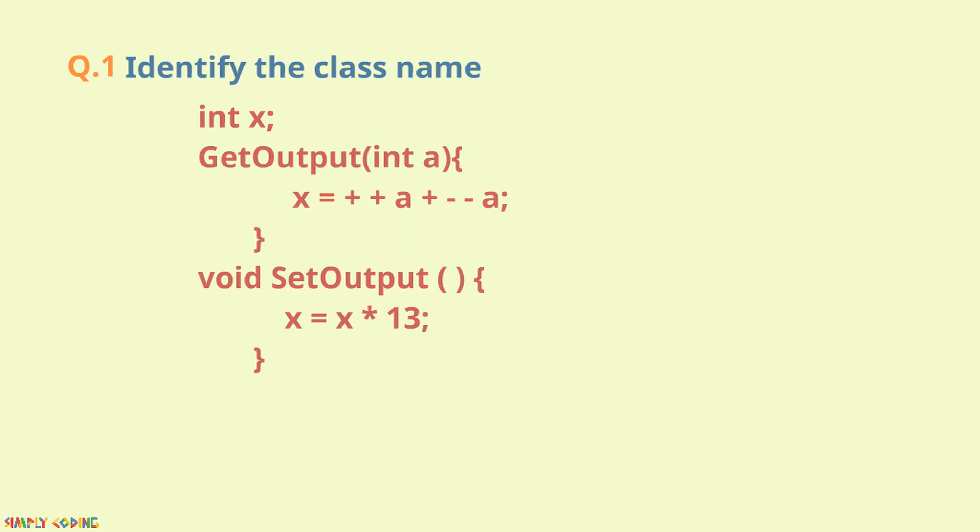For example, in the given code, constructor is given and you are asked to identify the class name. Since we just learned that the constructor has the same name as the class name, we should be able to answer this by finding the constructor, which is the function which does not have a return value.